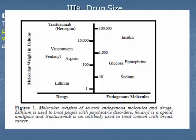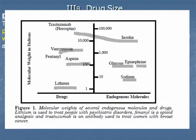A figure in the textbook illustrates the size range: lithium at about 7, sodium slightly larger, then glucose, epinephrine, and aspirin between 100 and 1,000 times hydrogen. Larger drugs include vancomycin (an antibiotic), insulin (a peptide), and herceptin (an antibody drug for breast cancer). Very large drugs have difficulty moving around the body and typically require parenteral routes of administration that put them directly into circulation.